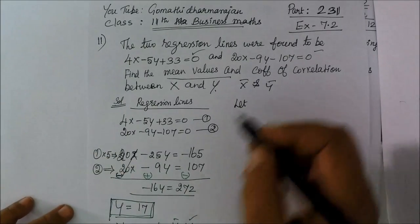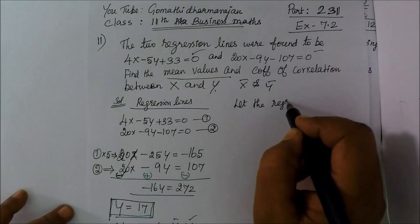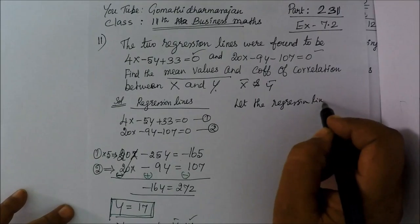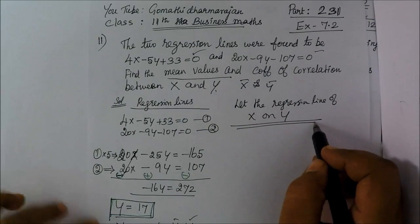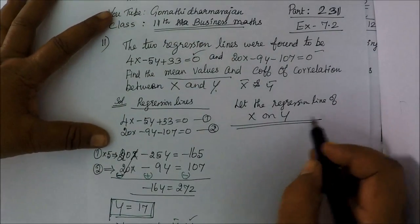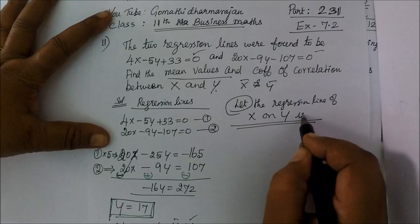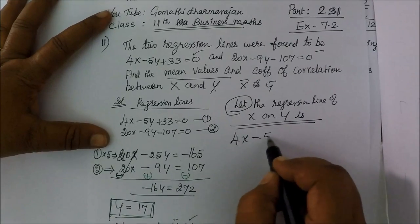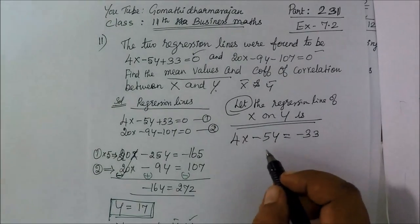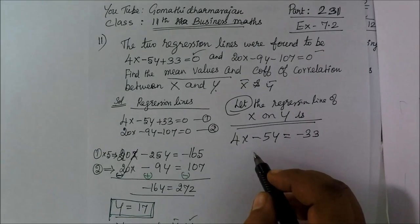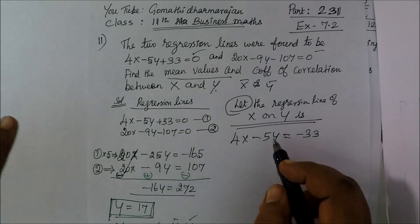Let the regression line of x on y be the first equation. We know the two things, so we say let the regression line of x on y. The first equation is 4x minus 5y, then plus 33 on the other side, giving minus 33. We usually write the value in terms of bxy and byx.